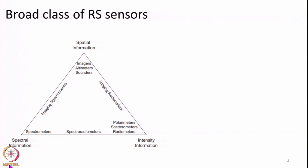What are these? How are these related to the image acquisition process? All these important concepts we will cover in the next few lectures starting from this particular lecture. Before we move on to actually looking at the procedure of image collection or image acquisition, we will first try to get a feel for what are the different classes of remote sensing sensors and how remote sensing sensors can be classified. Any remote sensing sensor can collect spatial information, spectral information, and intensity information — which we can also call radiometric information.